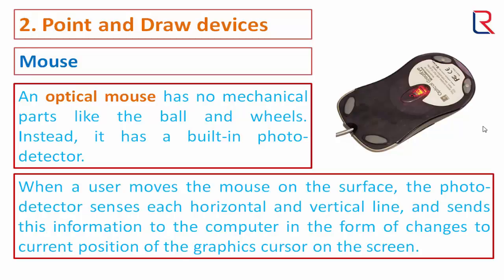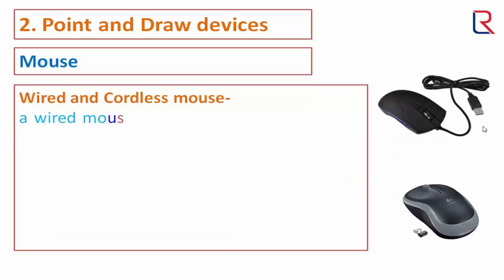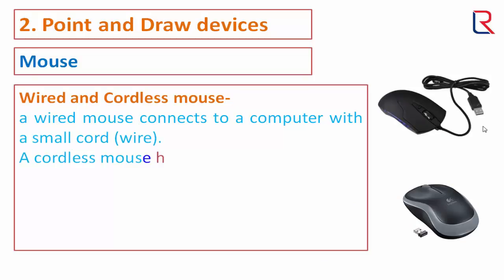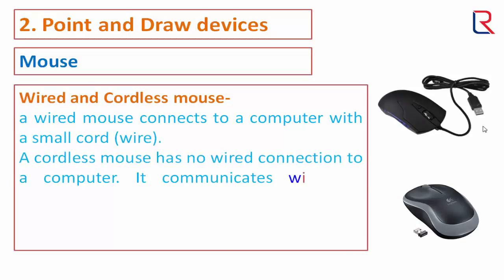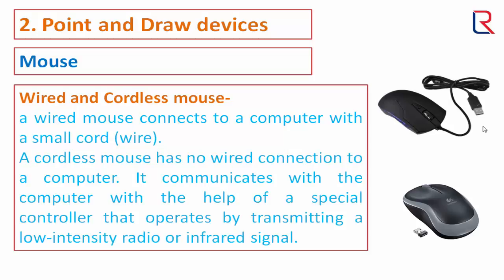When a user moves the optical mouse on the surface, the photo detector senses each horizontal and vertical line and sends this information to the computer as changes to the current position of the graphics cursor on the screen. A wired mouse connects to a computer with a small cord. A cordless mouse has no wired connection; it communicates with the computer via a special controller that operates by transmitting a low-intensity radio or infrared signal.